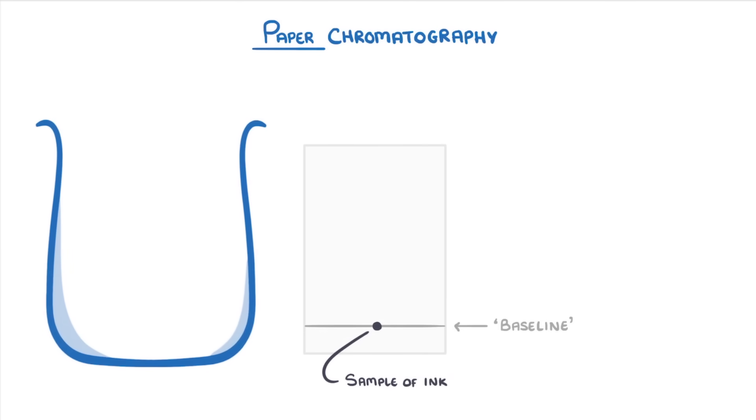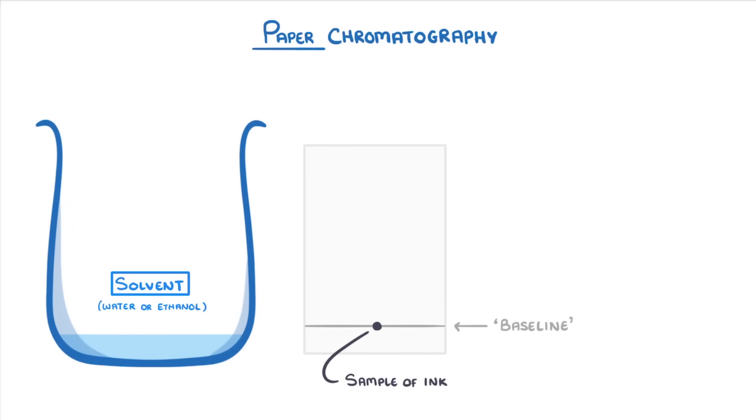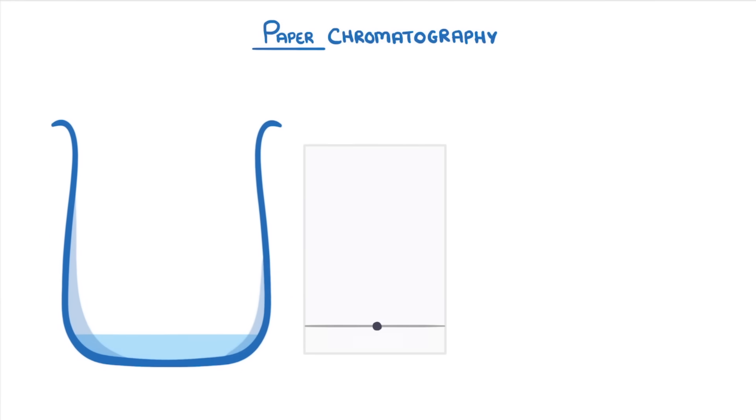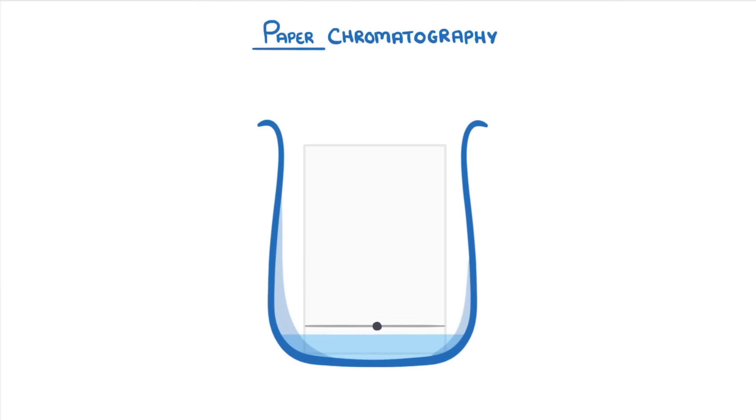Then we need to find a beaker and fill it with a shallow amount of solvent, like water or ethanol. We're now ready to start, and we can place the filter paper into the solvent. But importantly, we have to make sure that we don't submerge our pencil line and our spot of ink, which is why we made our solvent shallow. And if you're being careful, you should really place a lid on top to stop the solvent from evaporating.